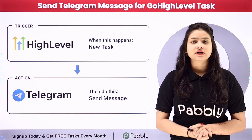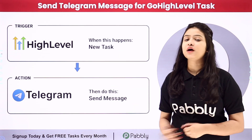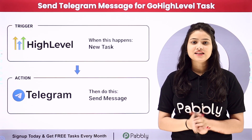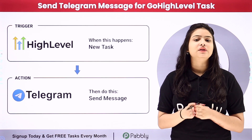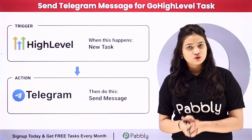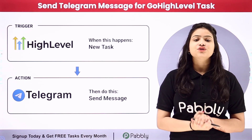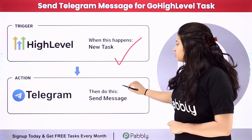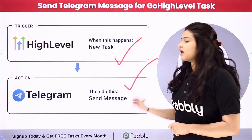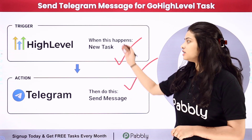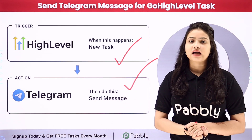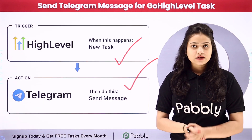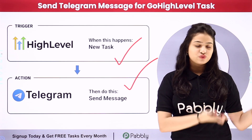For this we will have to set up a connection between Go High Level and Telegram, and we are going to do that without any coding or programming skills with the help of Pabbly Connect. Pabbly Connect works on two principles: trigger and action. In the trigger we are going to take Go High Level, and in the action we are going to take Telegram, to automate this entire process.